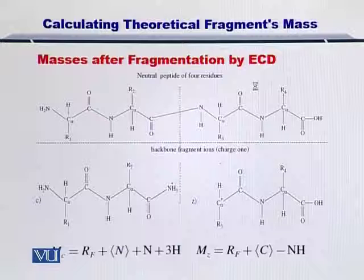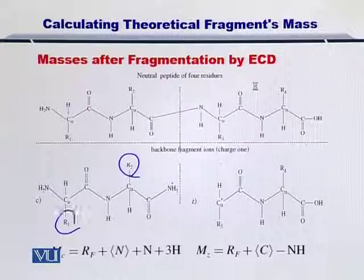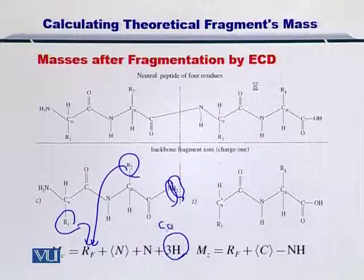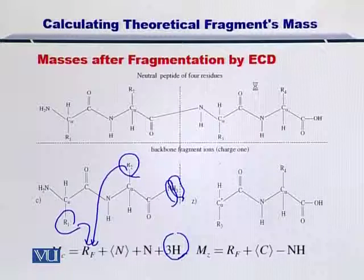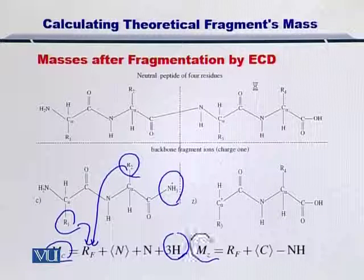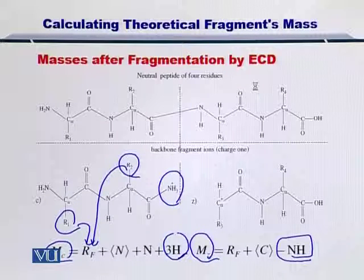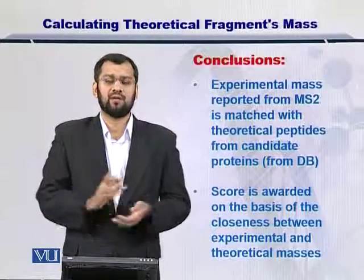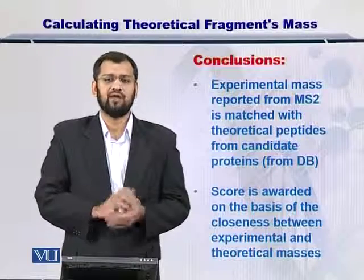Similarly, if you have some other fragmentation technique such as ECD, you can do the same procedure. You add up the molecular weight of the side chains, and if you notice carefully, you have 3 hydrogens added along with the nitrogen. Because otherwise it would have been a COOH if it were an intact protein, but since it's a fragment, this group is added here. And you can arrive at the C ion's molecular weight. Similarly for the Z ion, you use minus NH because it has been removed and donated to the C ion.